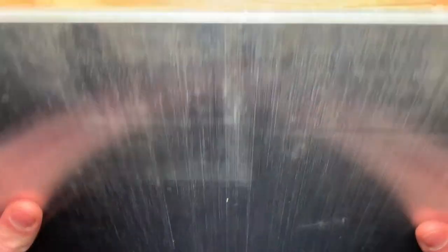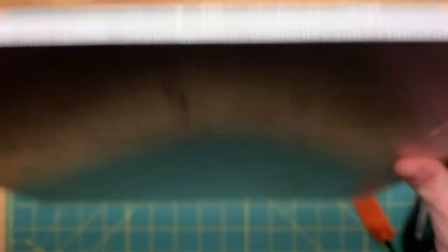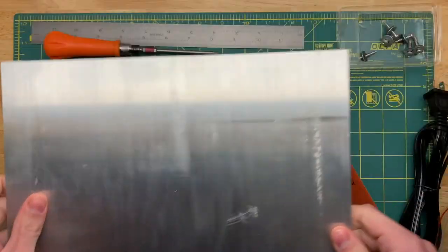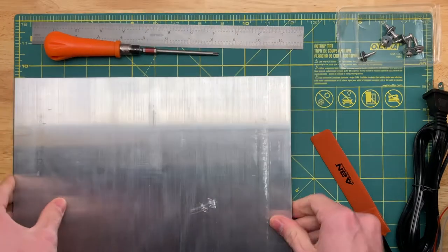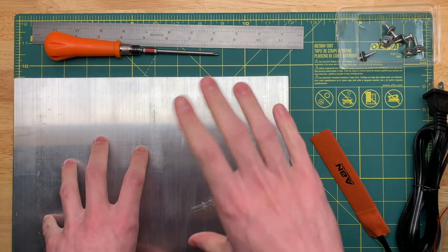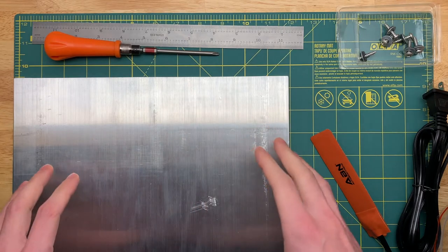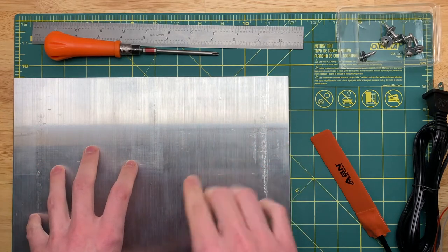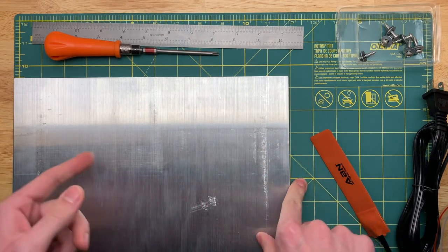But if you stick it to something thermally conductive like aluminum you shouldn't have any issues. So what is this? Well this is a quarter inch thick, 12 inch by 12 inch aluminum plate.